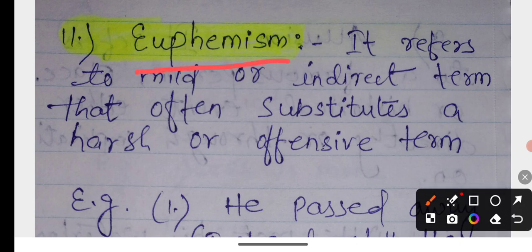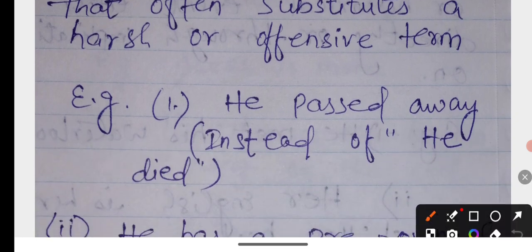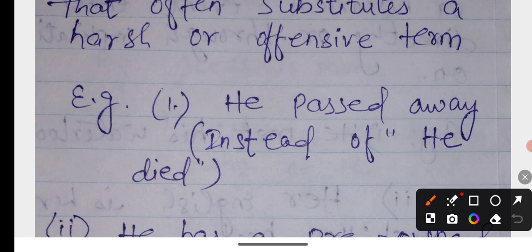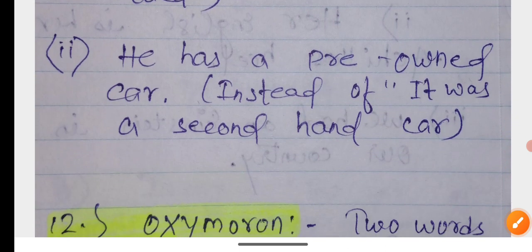Euphemism. It refers to mild or indirect terms that often substitute a harsh or offensive term. When something is socially or practically good to say indirectly. Like, he has passed away instead of saying he died. Your father died, your relative died. Using softer words that sound better.